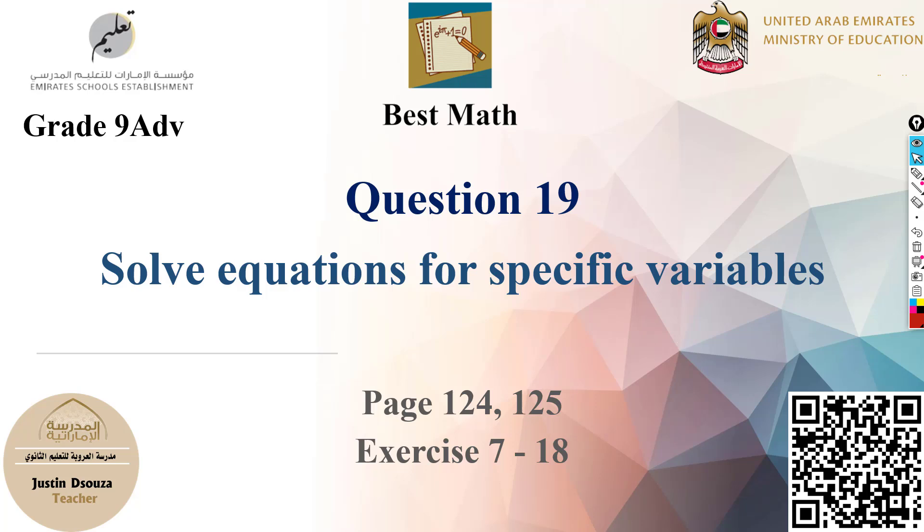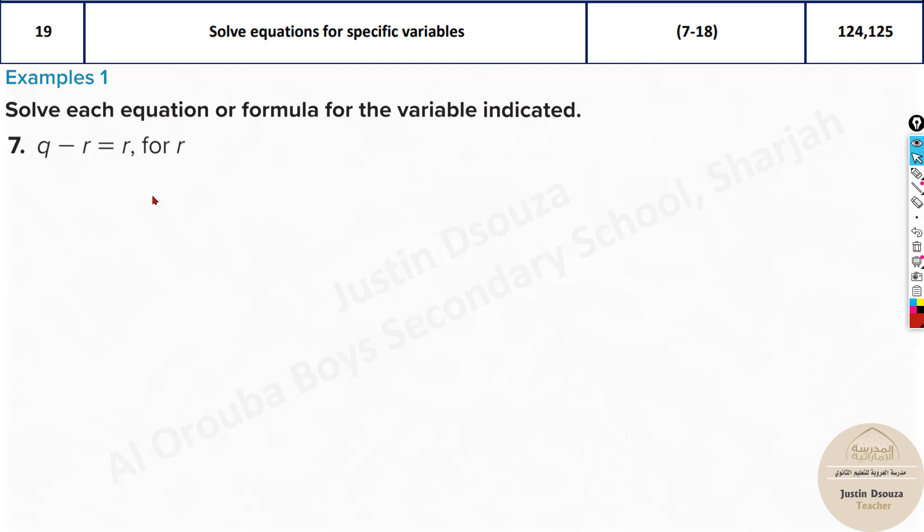Question number 19 is to solve equations for specific variables. Now you can see in this question there are two unknown variables, Q and R. And what do they want you to solve? You can't solve for any which you want. You need to solve for the indicated variable or the specified one.